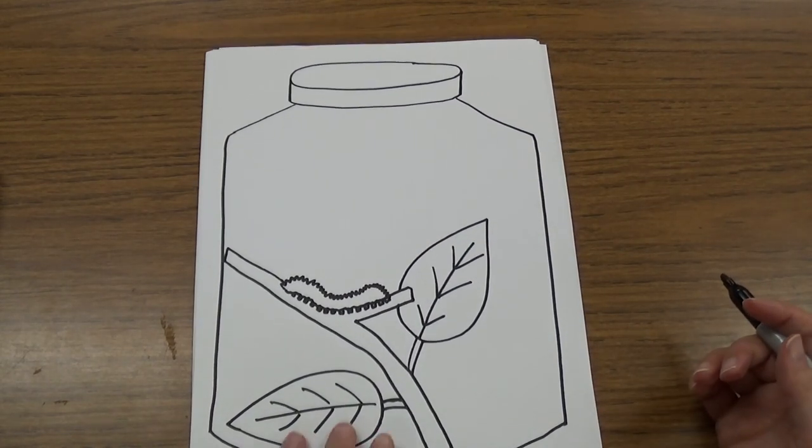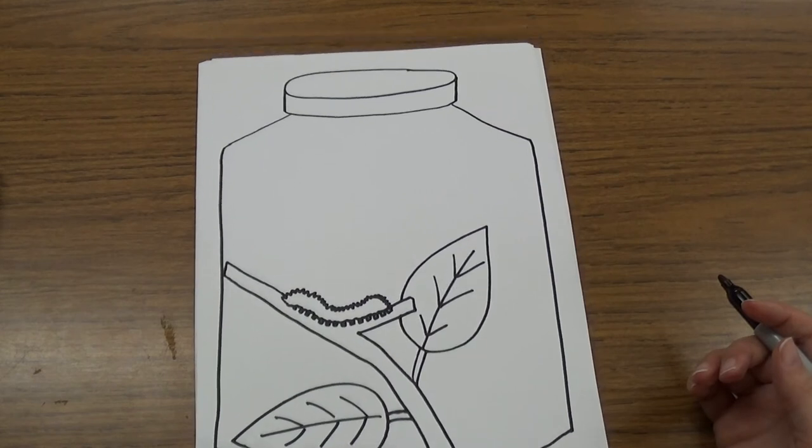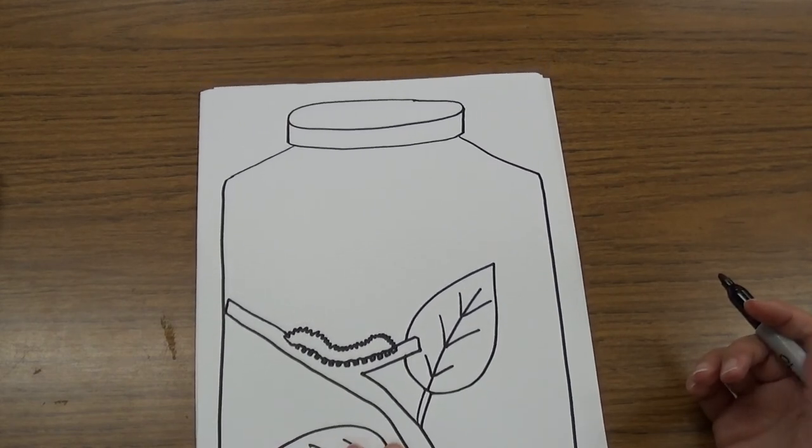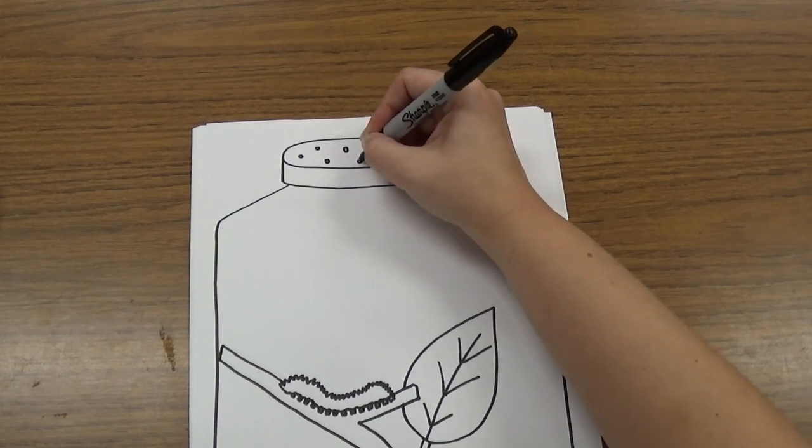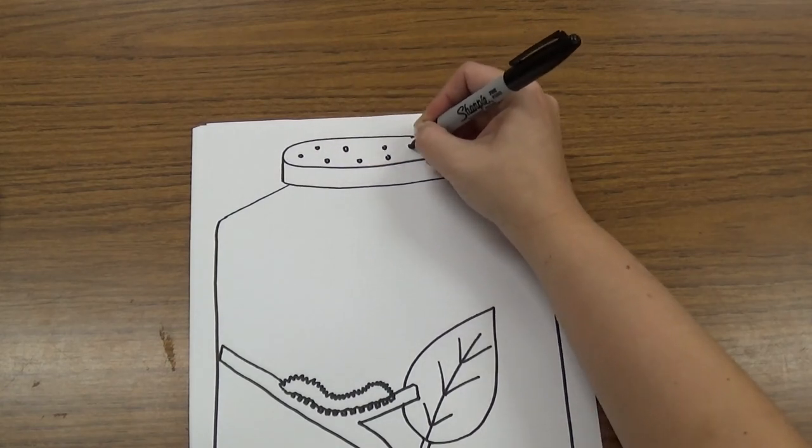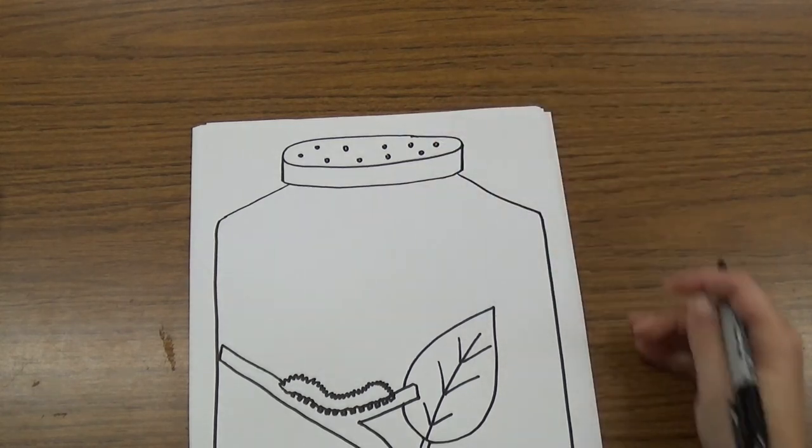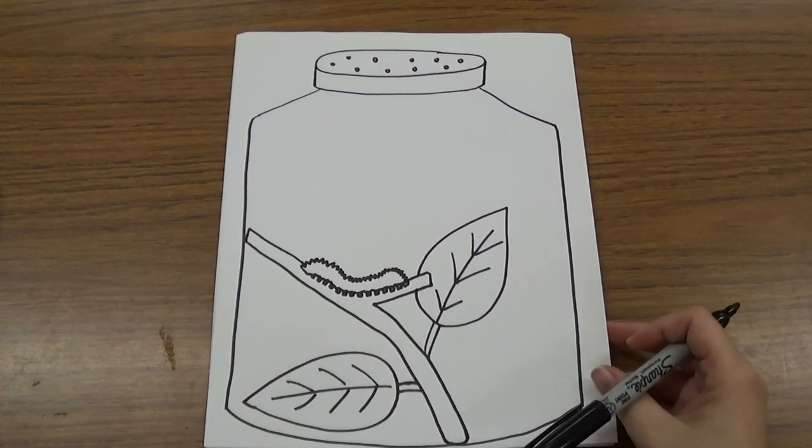I want to make sure my caterpillar can live. It has to have air to live, so I'm going to make some little holes in the top so it can breathe. And then I have a nice bug in a jar.